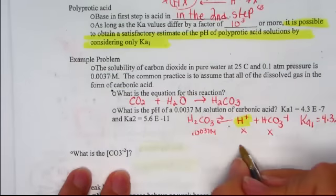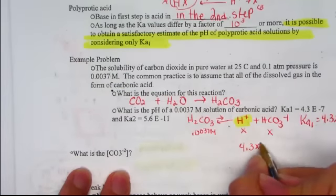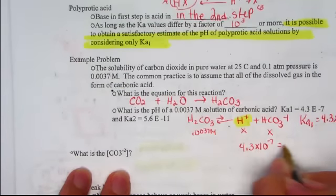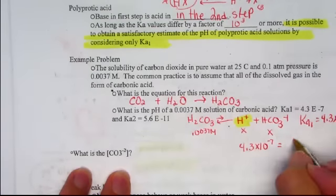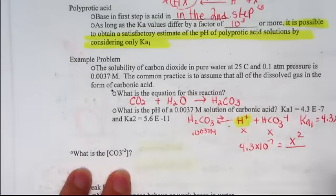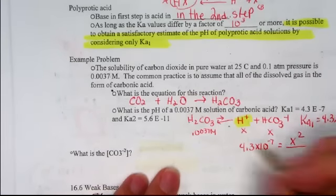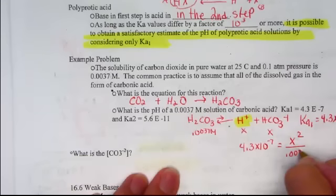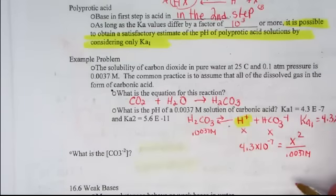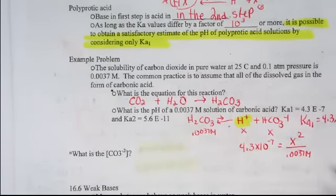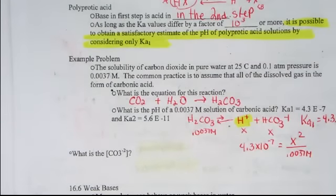Given Ka1 as 4.3 times 10 to the negative 7th, set that equal to products over reactants where the products are the two ions each represented by the value of X, so I'll write that as X squared, set over my 0.0037 molar solution of acid. When we solve for X we'll check the 5% rule and see if our assumption was correct. We might have to go back and create an ice chart, hopefully not.